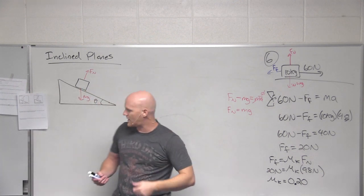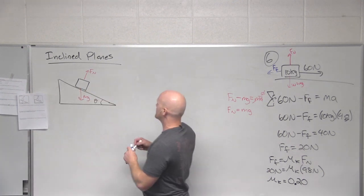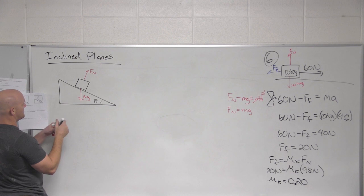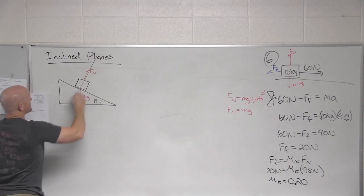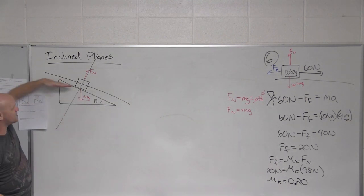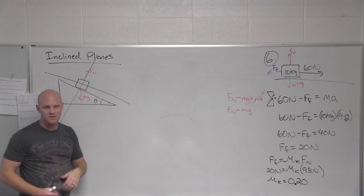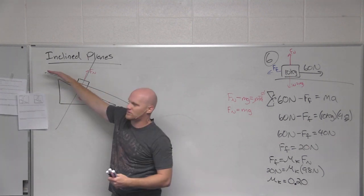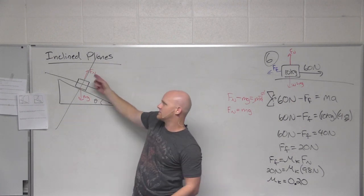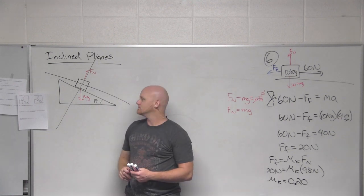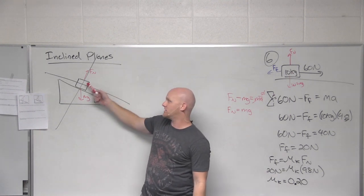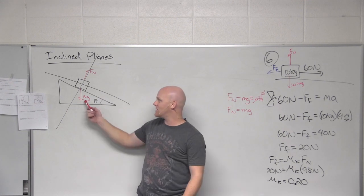Gravity — the weight — has two components. In a problem like this, we often define x and y differently. Instead of the normal horizontal and vertical axes, we create a new set of axes where the new x goes up and down the incline, and the new y is perpendicular to that, in the direction the normal force points. With this setup, the normal force points in the direction of our new y.